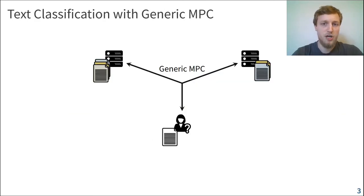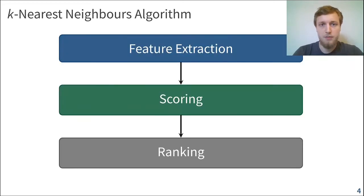The problem is that this generic approach is very inefficient. Using a general MPC compiler comes with a huge overhead in terms of communication and computation. So we need to do better than that, and we do that by looking at the individual phases that our algorithm has. For the k-nearest neighbors text classification algorithm which we're going to use here, we can identify the following three phases.